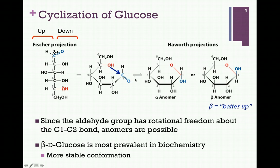Notice the double arrows here, indicating the molecule readily converts between the linear form, the alpha anomer, and the beta anomer. So in a solution of glucose, all forms would be present. In the case of D-glucose, the beta anomer is more stable and would therefore be the most prevalent form. This can be more readily seen in a chair conformation of beta-glucose, though we do not have it illustrated here.